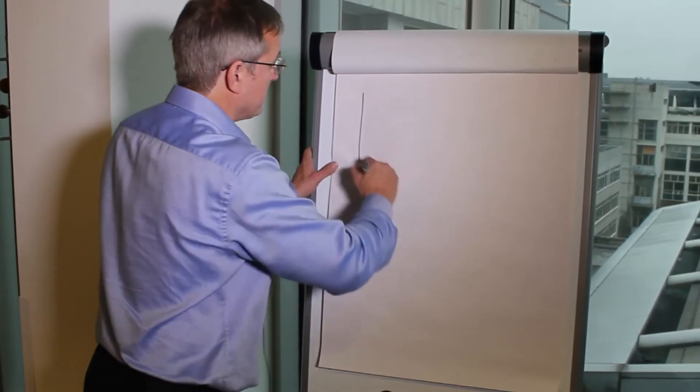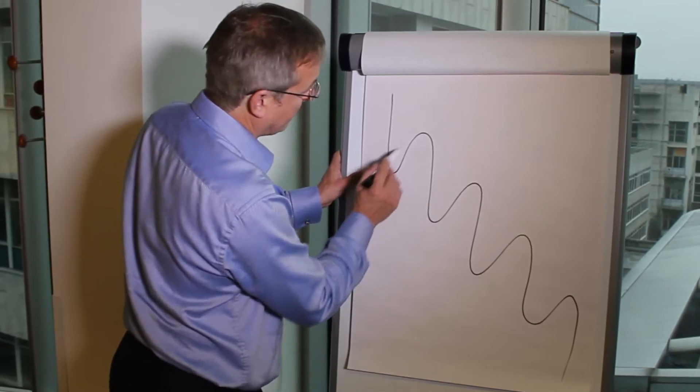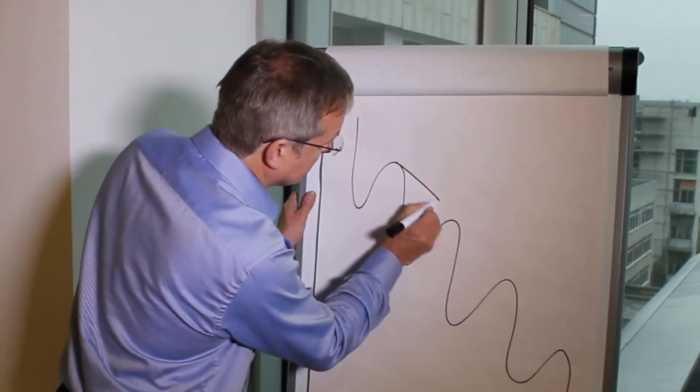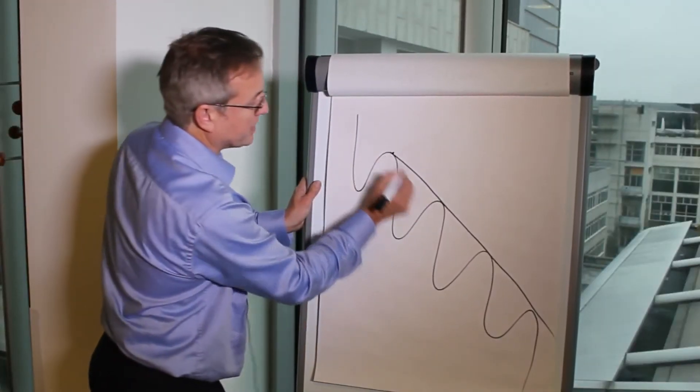Bear trends are the mirror of the bull trend. They are again falling highs and falling lows. The critical measure for technicians of the bear trend is the diagonal joining the highs.